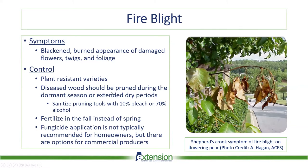In terms of control, there are some resistant varieties, and if you're interested I'd be happy to provide them. It's very important, especially in the landscape, to plant resistant varieties to prevent this disease. If you do notice fire blight symptoms, you can prune the diseased wood, but do so during the dormant season or extended dry periods when the pathogen is less active and less likely to spread. The most important and common theme across all three diseases I'm covering today: you really have to sanitize your pruning tools using a 10% bleach or 70% alcohol solution to prevent pathogen spread.